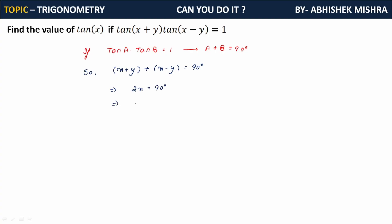From here we get 2x equals 90 degrees, which implies x equals 45 degrees. We have to find the value of tan x, which equals tan 45 degrees, and that equals 1. This is the answer.